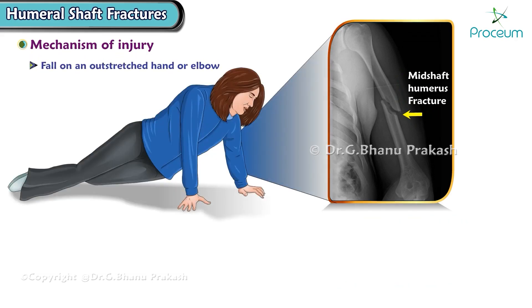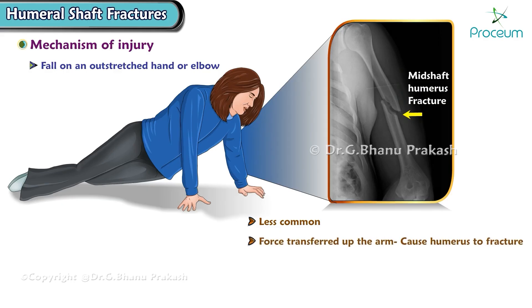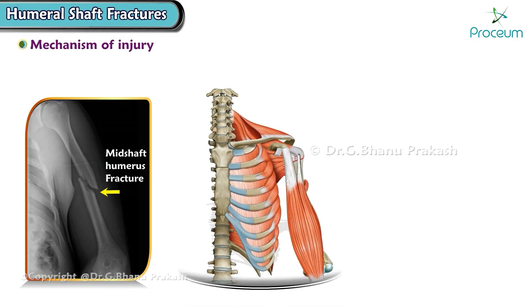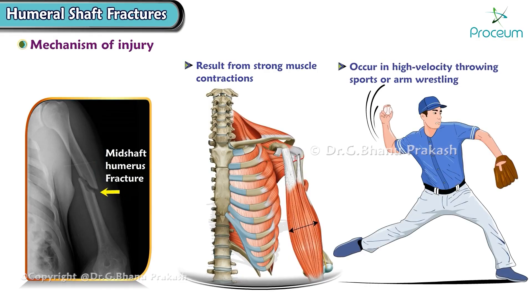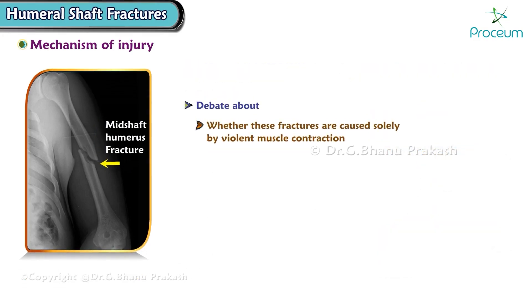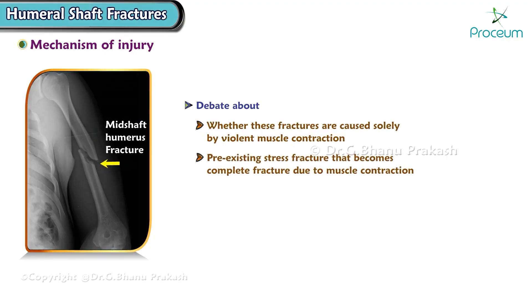Although less common than direct trauma, a fall on an outstretched hand or elbow can also result in a mid-shaft humerus fracture, as the force transferred up the arm can cause the humerus to fracture. Mid-shaft fractures can also result from strong muscle contractions, such as in high-velocity throwing sports or arm wrestling. There is some debate about whether these fractures are caused solely by violent muscle contraction, or if a pre-existing stress fracture must be present that becomes complete due to the muscle contraction.